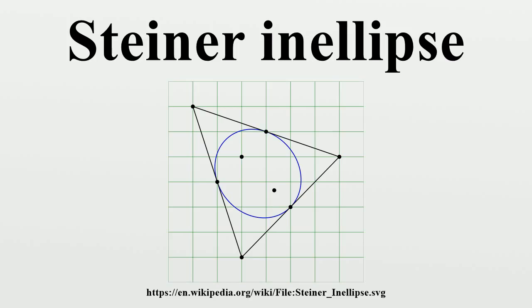The foci of the Steiner ellipse of a triangle are the intersections of the ellipse's major axis and the circle with center on the minor axis and going through the Fermat points. As with any ellipse inscribed in a triangle ABC, letting the foci be P and Q we have generalization.